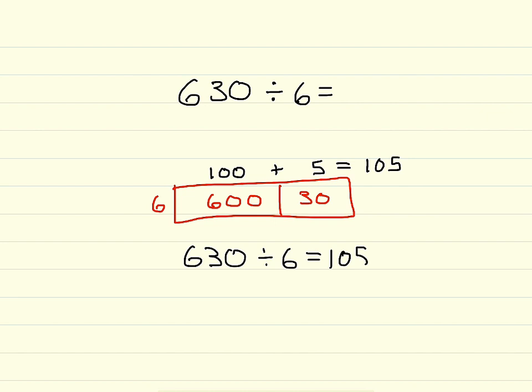Another way to think about it is by breaking up 630 like this: 600 plus 30, and dividing each number by 6. 600 divided by 6 equals 100, and 30 divided by 6 equals 5.